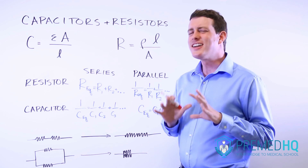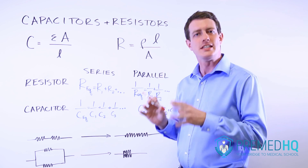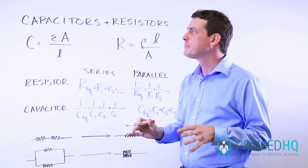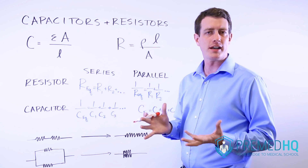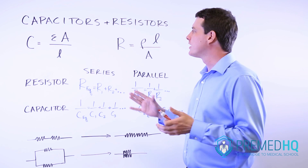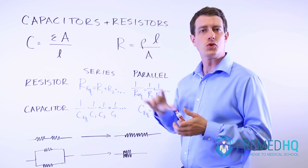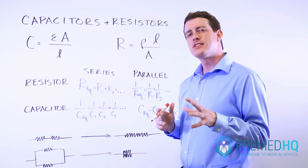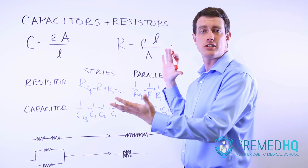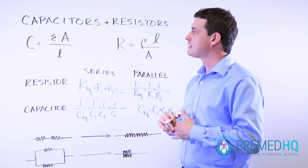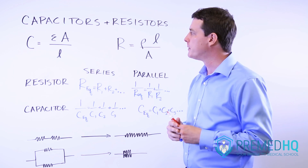Capacitors and resistors. There's not a ton that you need to know about these as far as deep analysis of what's going on with them, but it's important to understand the basic principles behind how they operate. We've already covered how resistors generate power and capacitors store energy, and the next thing is to realize how changing the surface area and changing the length influences the ability to store energy or to generate power.